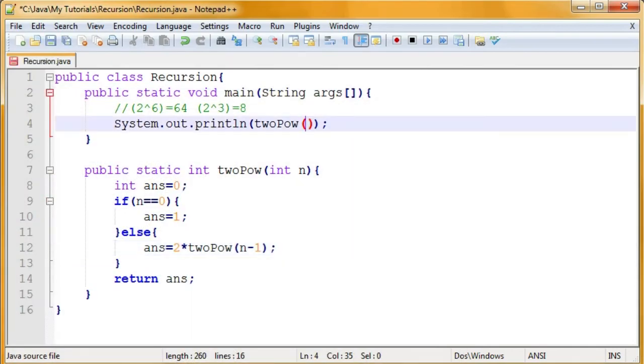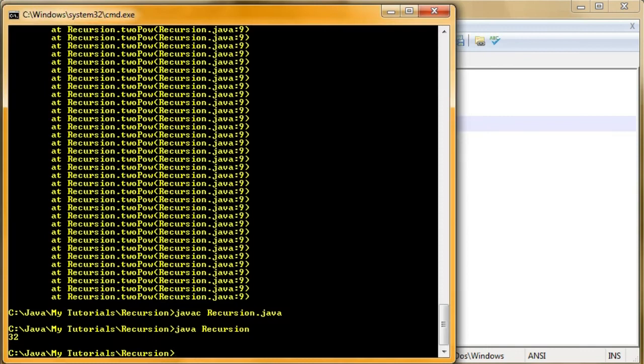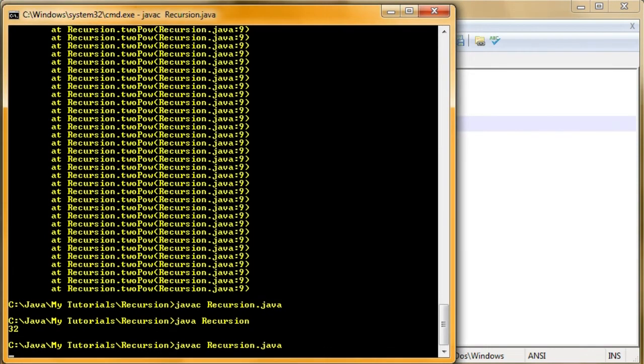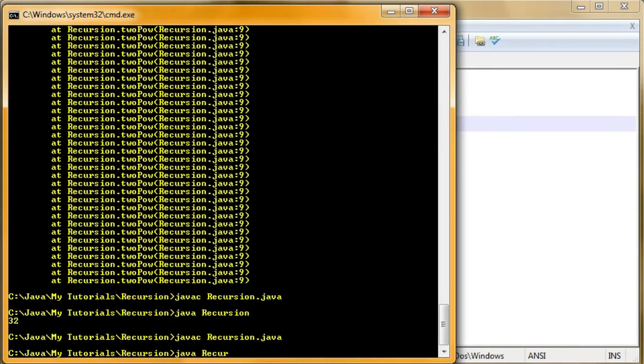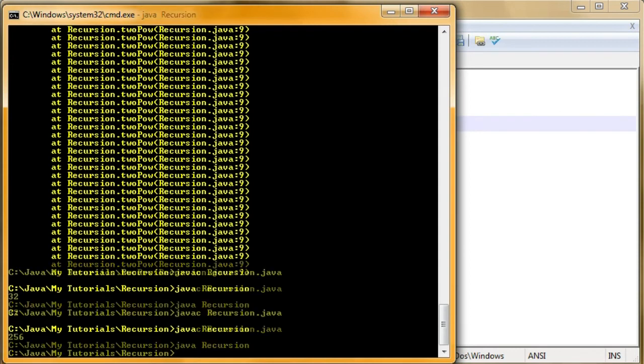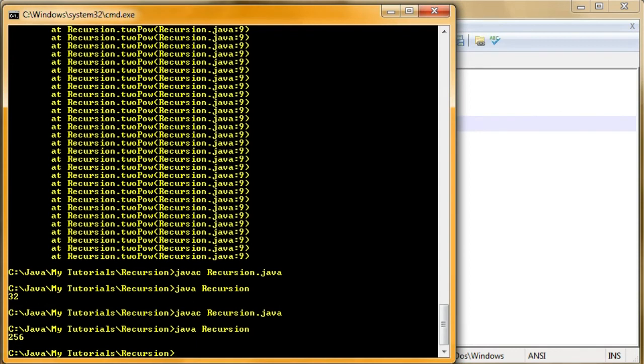Now, let's try and think of another one. 8. I believe that's 256. So, let's see if this works as well. Java C recursion. Java recursion. And give me 256. So, this is a nice, clean way of doing it.